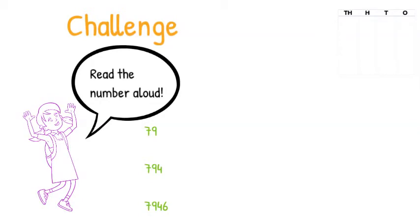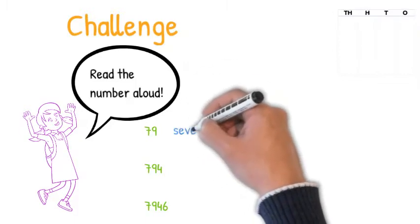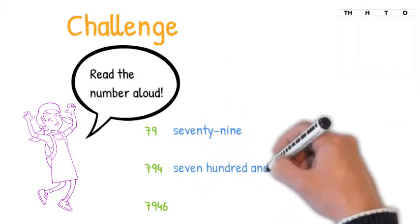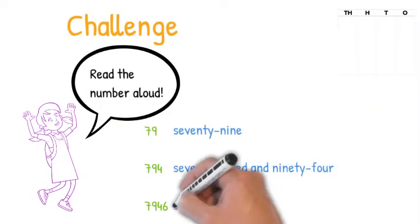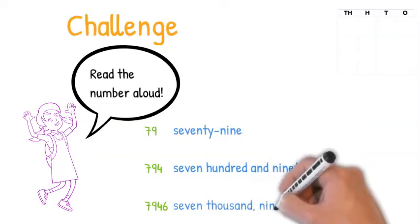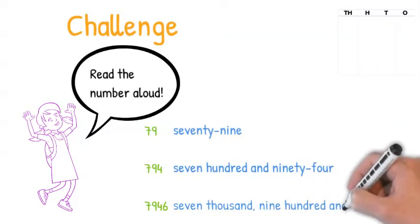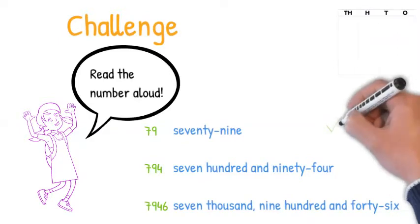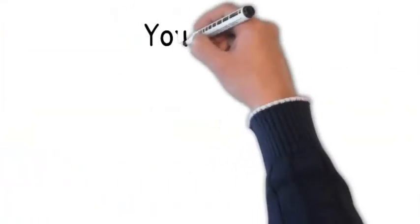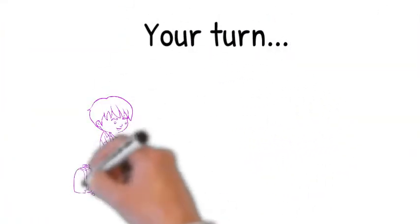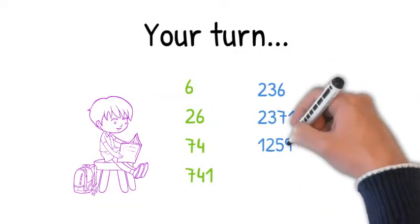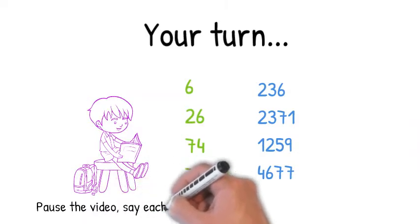Okay, let's see how you did. Here's the answers. 79, 794, and 7,946. Okay, now it's your turn. Try to write these numbers as words. Remember to say them aloud and write in words what you say. Pause the video here to complete the task.